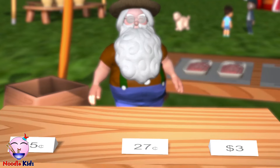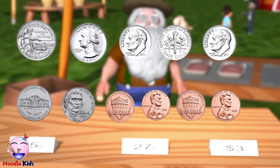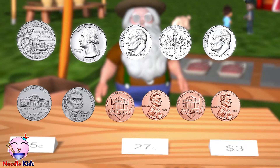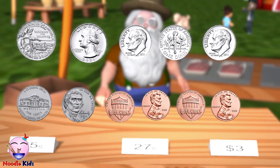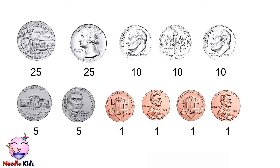Let's see how much money I have left: two quarters, three dimes, two nickels, and four pennies. Could you help me count? Sure. First, write down the value of the coins underneath. Let's write twenty-five cents under the quarters, ten cents under the dimes, five cents under the nickels, and one cent under the pennies. Now let's add them up.